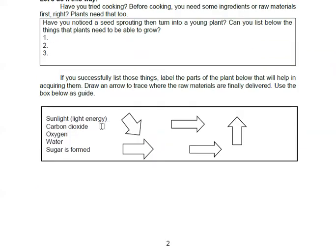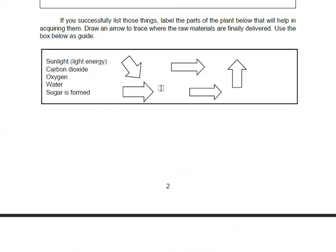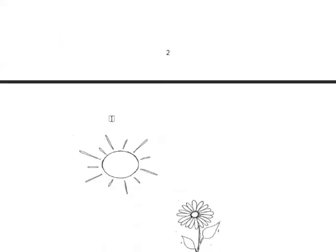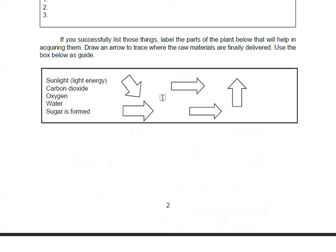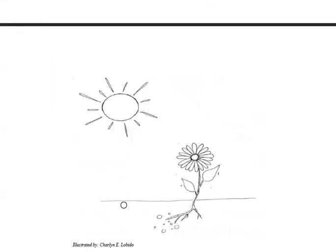After doing that, you copy this box. And label the parts. Alright, sorry, don't copy this box, but use this box as reference. Copy the drawing and then label it. So these are the things that you need for photosynthesis to occur.